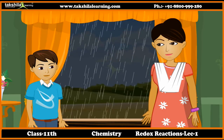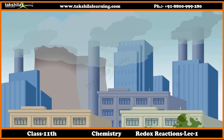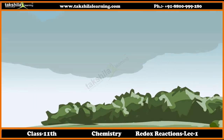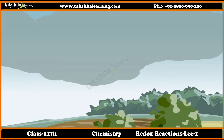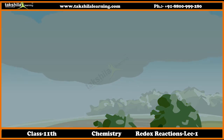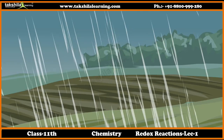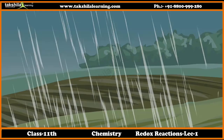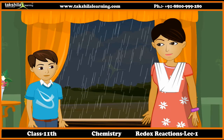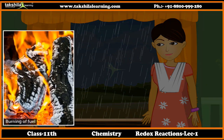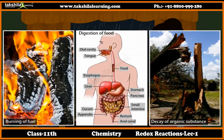She replied that the atmosphere has many polluted particles like carbon, sulfur, and nitrogen. These particles make redox reactions with water drops and turn them into acid rain. Students, redox reactions are all around us. Burning of fuel, digestion of food, and decay of organic substances are few examples of redox reactions. Today we will discuss more about redox reactions.